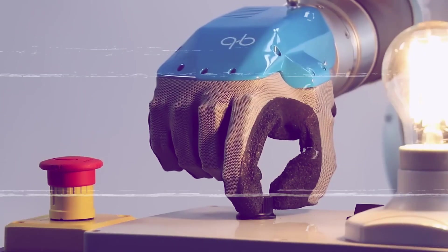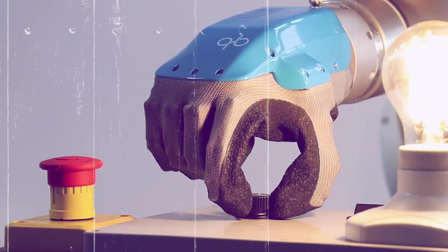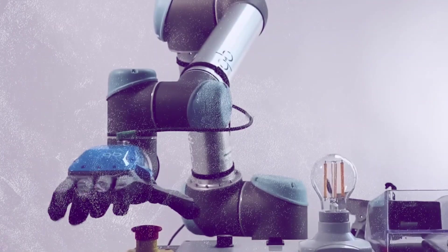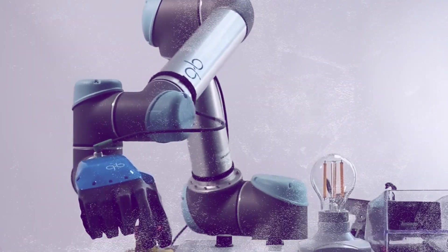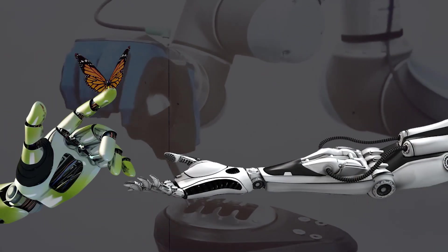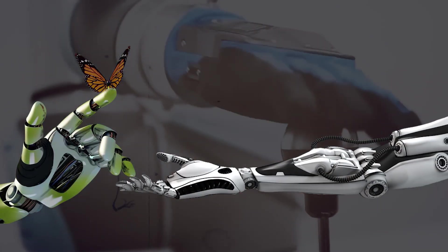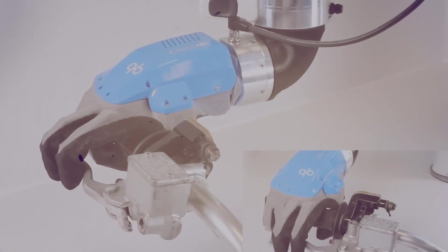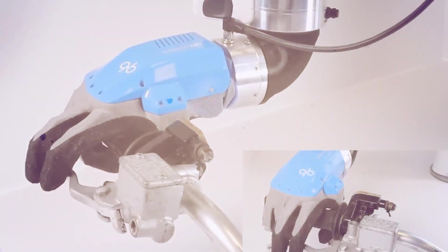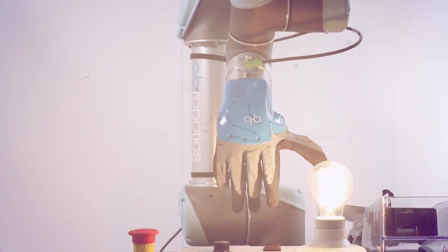The grip can adapt to the shape of the objects it picks up, ensuring safety during unexpected human-robot interactions. As it is designed for industrial applications, the soft hand has the strength to handle heavy loads without causing harm to operators or the products it handles. This development is a real game-changer for industries where manual labor often leads to back problems and product damage.